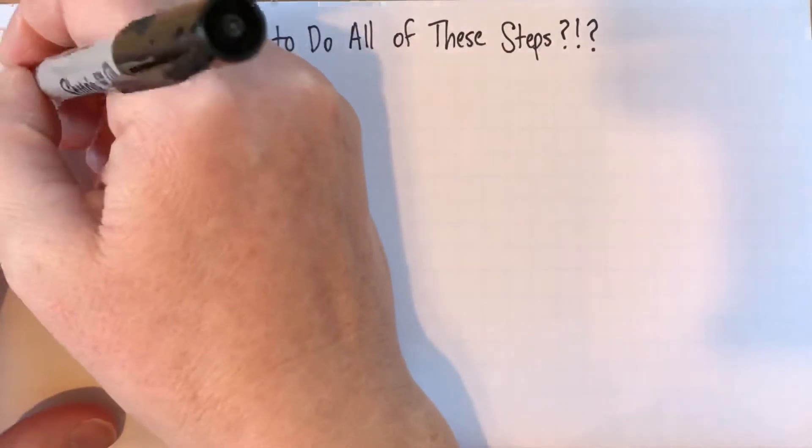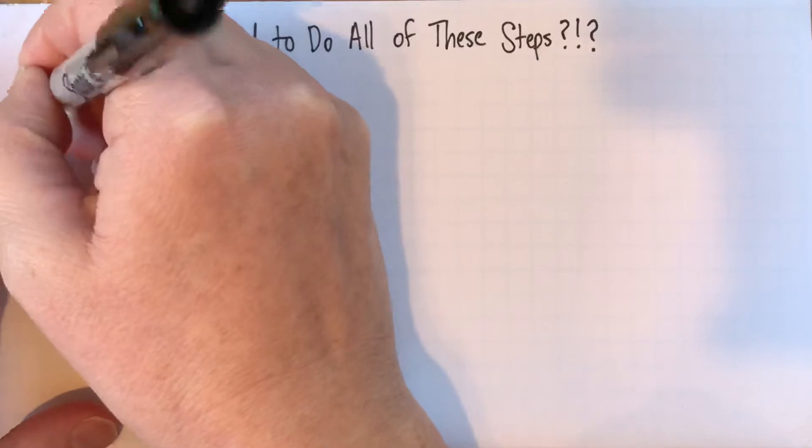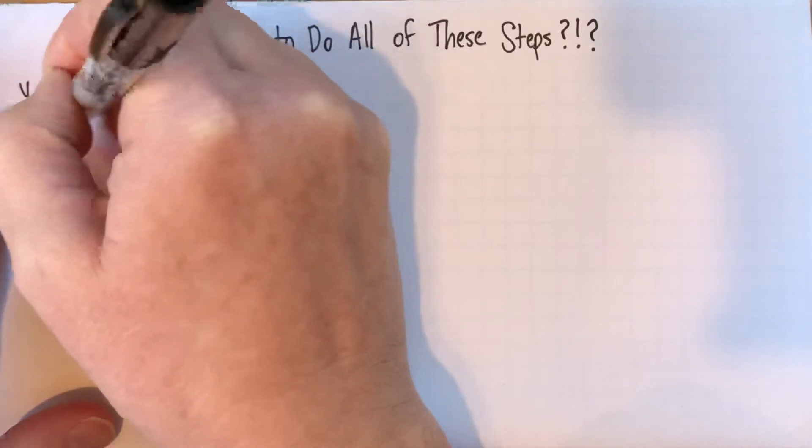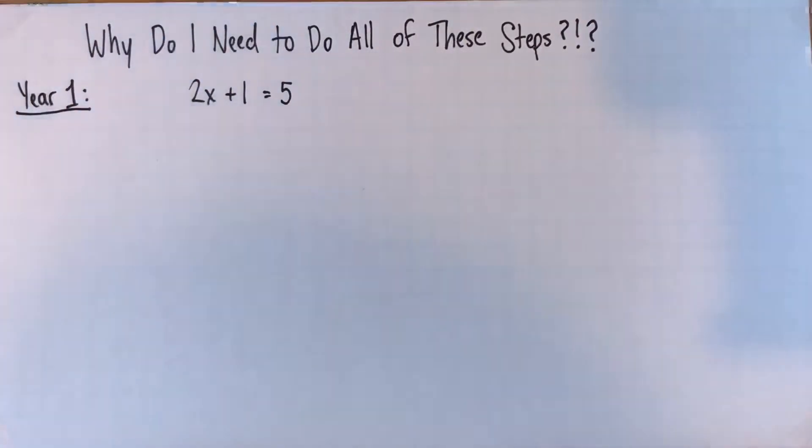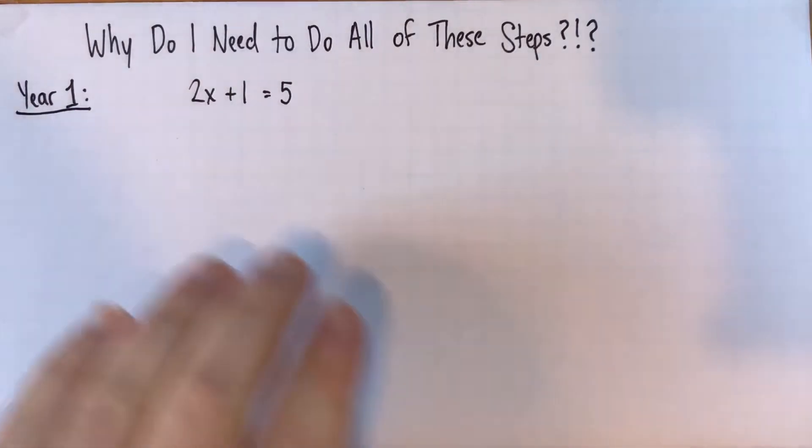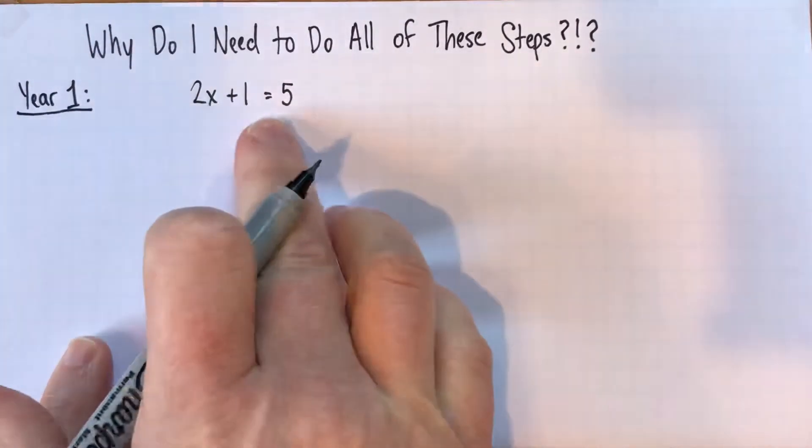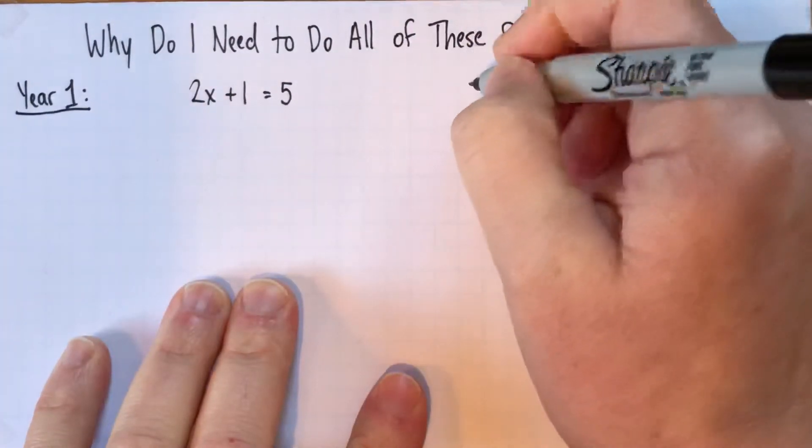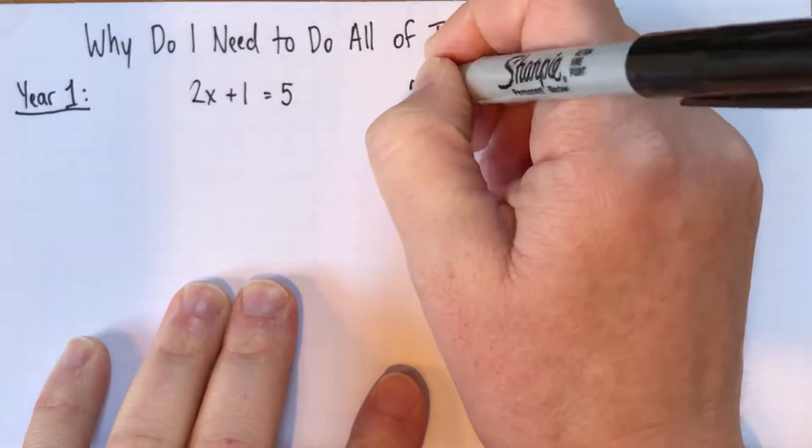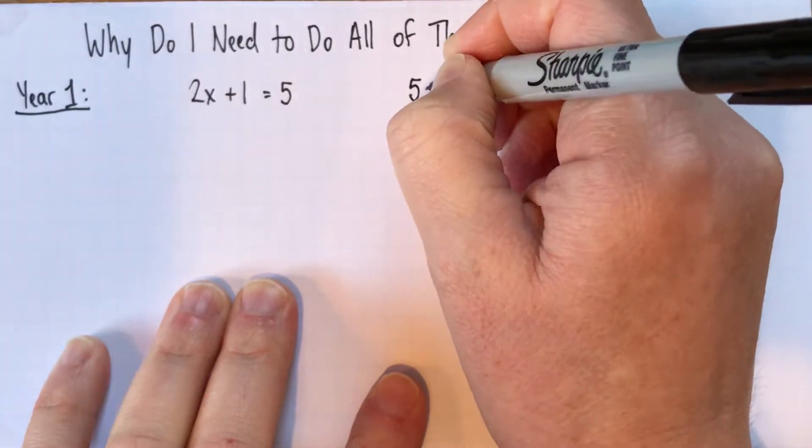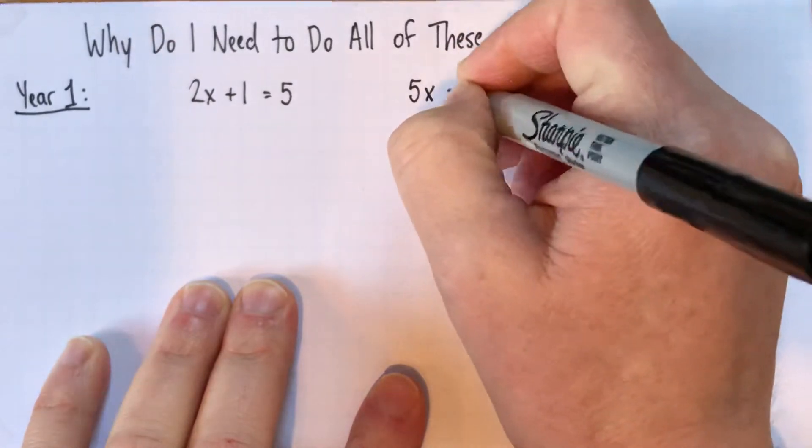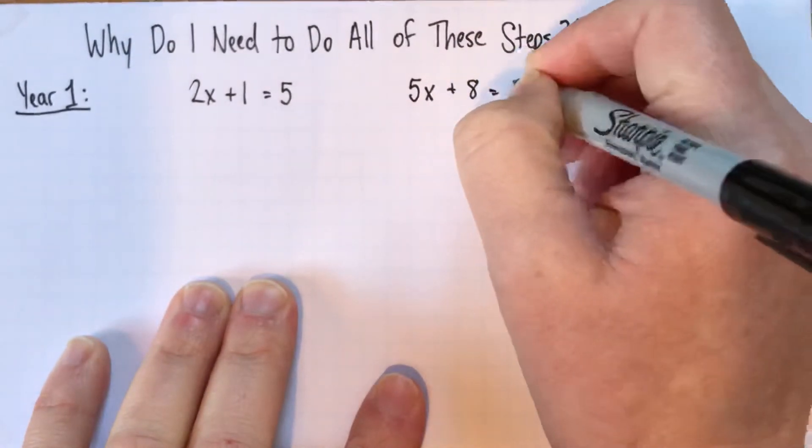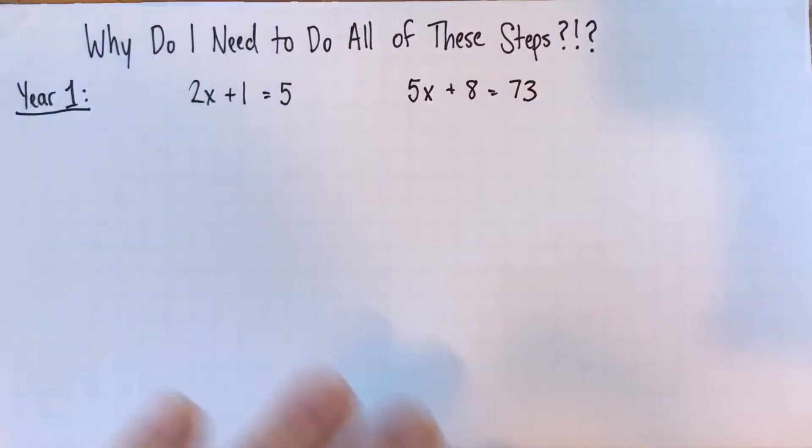So the first year that you're learning to do this, so I'll call that Year 1, you have to solve equations like this. And here's another example here. You have to solve equations like, I've actually just copied these out of the textbooks that we use. Now 5x plus 8 equals 73.